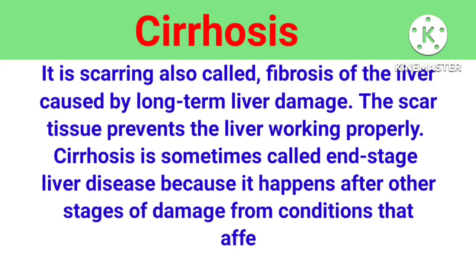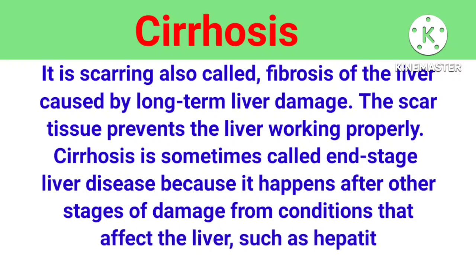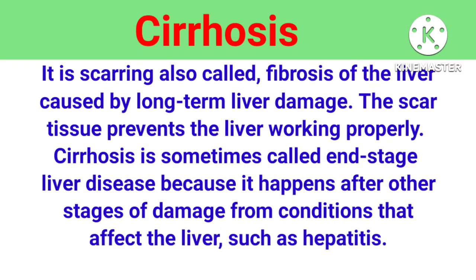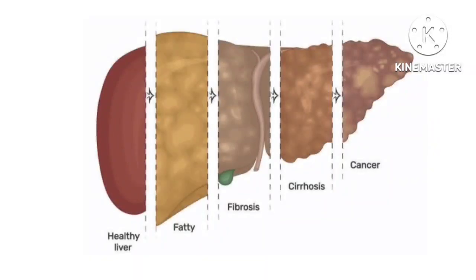To show some pictures of different liver conditions: this picture shows five different conditions. Starting from the left, the first is a normal liver, the second is fatty liver which appears yellow, the third is fibrosis, the fourth shows liver cirrhosis, and the last one is liver cancer.